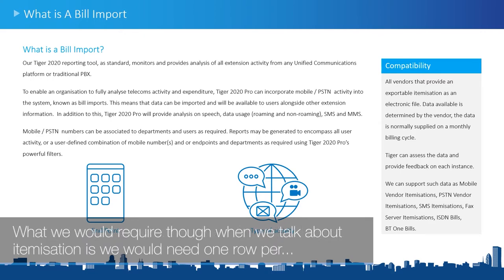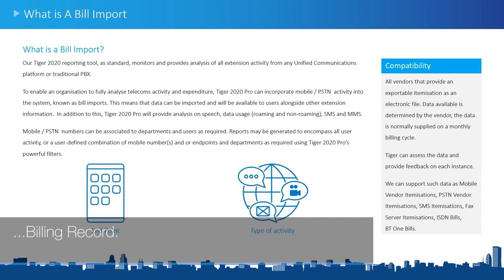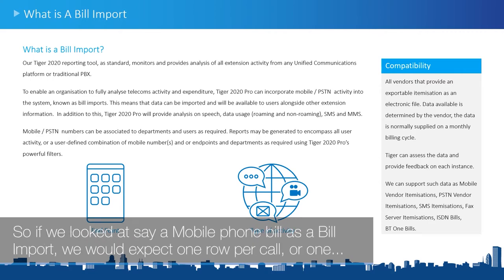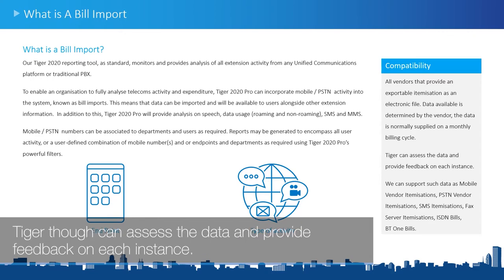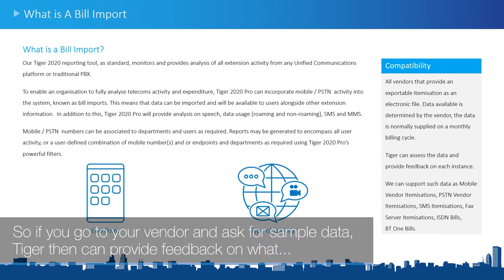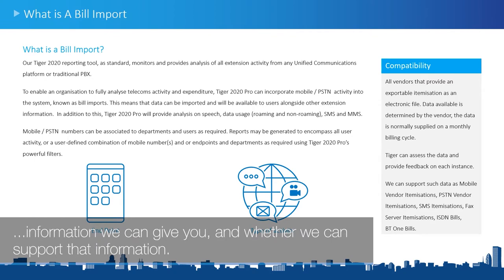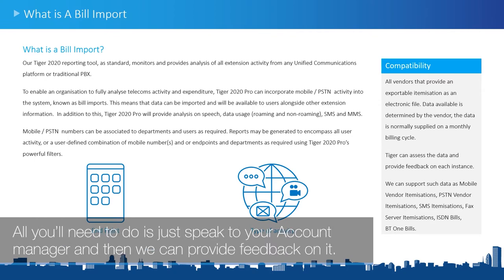What we require when we talk about itemization is one row per billing record. So if we looked at a mobile phone bill, we would expect one row per call, one row per MMS, or one row per SMS. Tiger can assess the data and provide feedback in each instance. If you go to your vendor and ask for sample data, Tiger can provide feedback on what information we can give you and whether we can support it — just speak to your account manager.